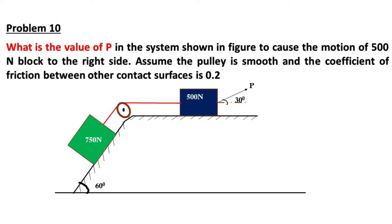Question 1: What is the value of P in the system shown in the figure to cause the motion of the 500N block to the right side? Assume the pulley is smooth and the coefficient of friction between other contact surfaces is 0.2.